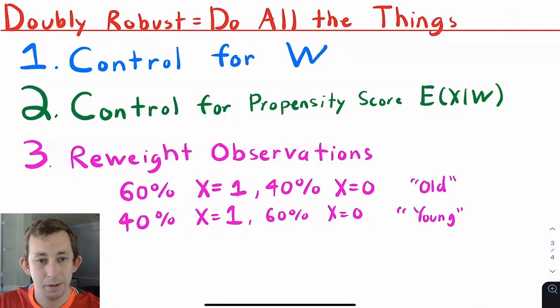So again, doubly robust estimation: you need propensity score matching, you need the controls, and you also need to go ahead and reweight those observations to be a more representative sample.